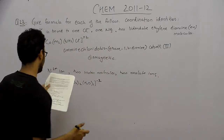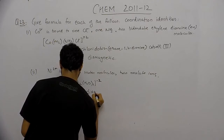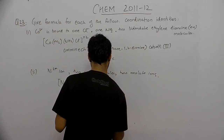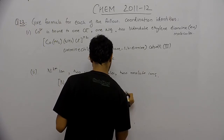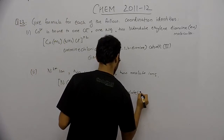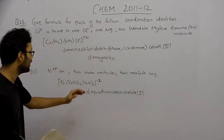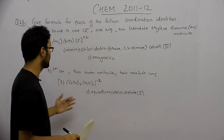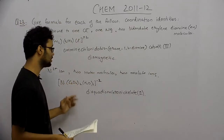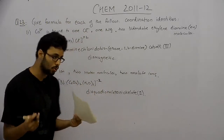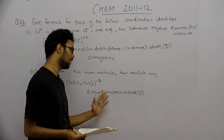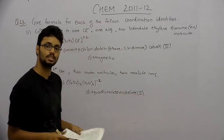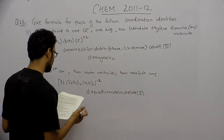The name of this compound is: diaqua (for two water molecules — 'aqua' refers to water), dioxalato (since oxalate is negatively charged, the naming is 'oxalato', and because there are two oxalate ions, it is 'dioxalato'), nickelate(II) — nickel is positively charged and in the plus 2 oxidation state. The magnetic behavior of this compound is paramagnetic.